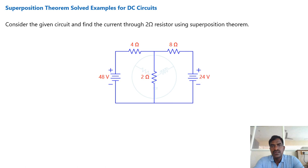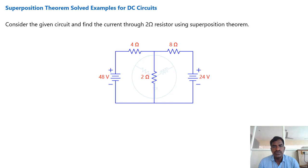Coming to the Superposition Theorem solved example for DC circuit. Consider the given circuit and find the current through the 2 ohm resistor using the Superposition Theorem. In this circuit, we need to find the current through the 2 ohm resistor.